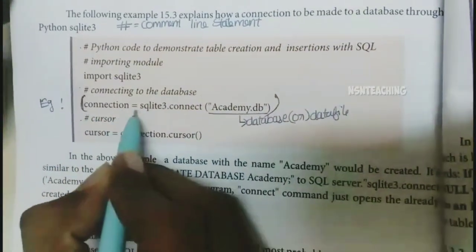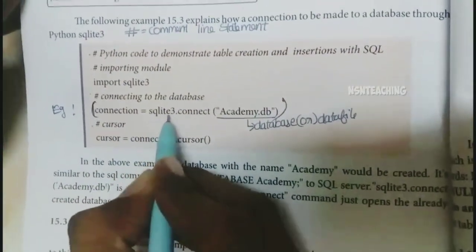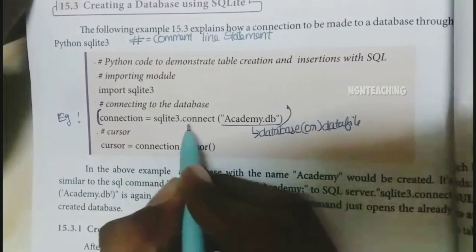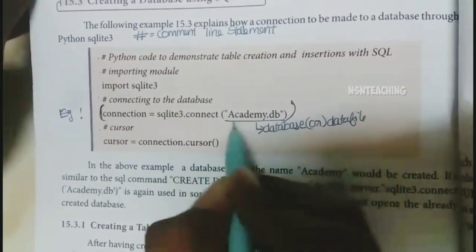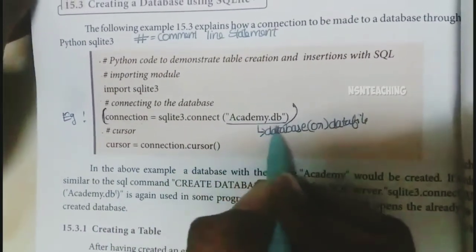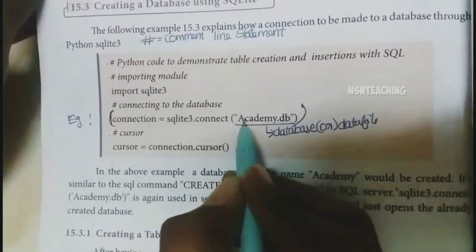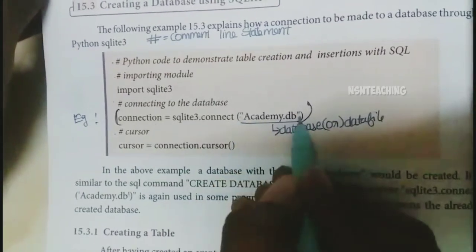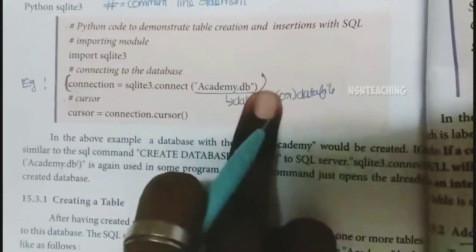Example: connection = sqlite3.connect('academy.db') — open and close the connection.